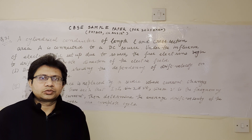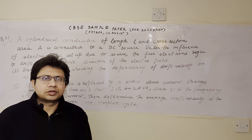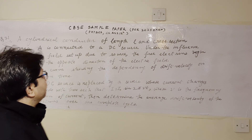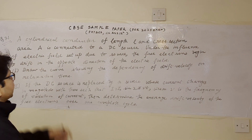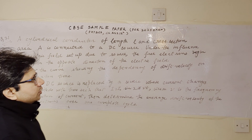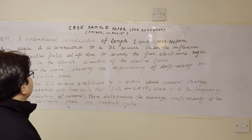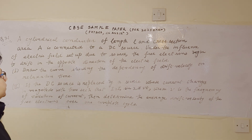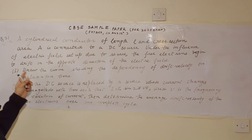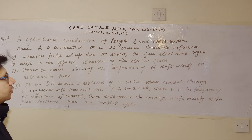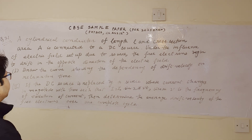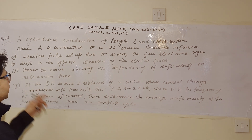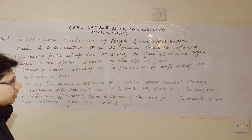Hello students, how are you? Hope you are doing well. Now the question is: a cylindrical conductor of length L and cross-section area A is connected to a DC source. Under the influence of the electric field set up due to the source, the free electrons begin to drift in the opposite direction of the electric field.